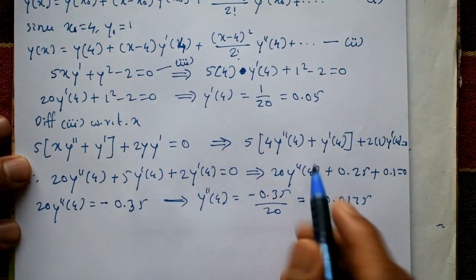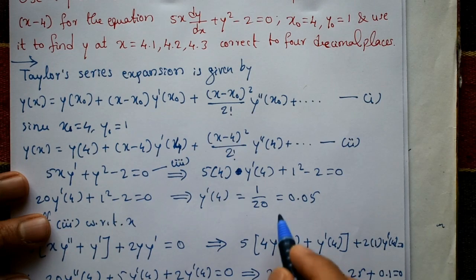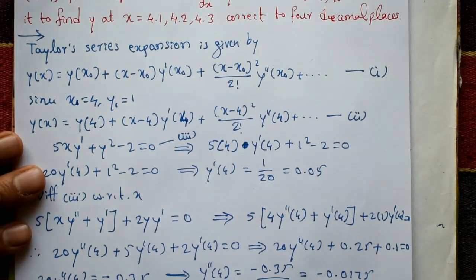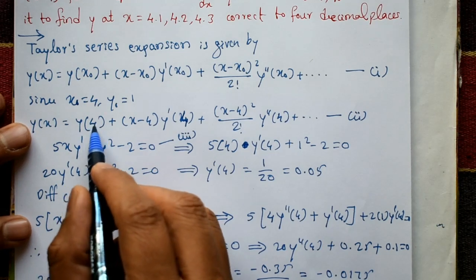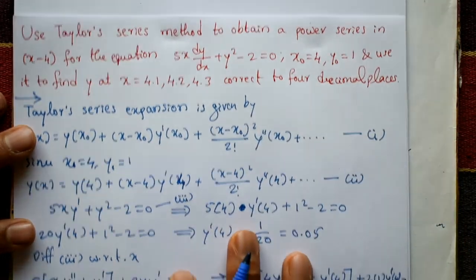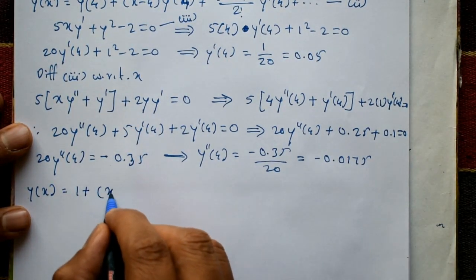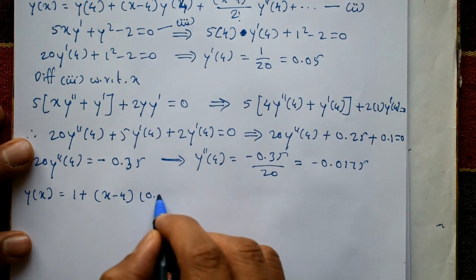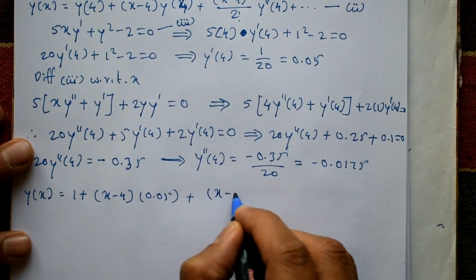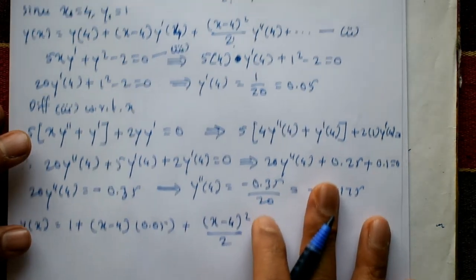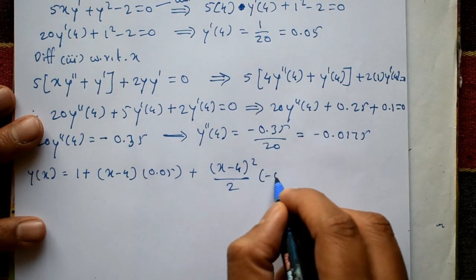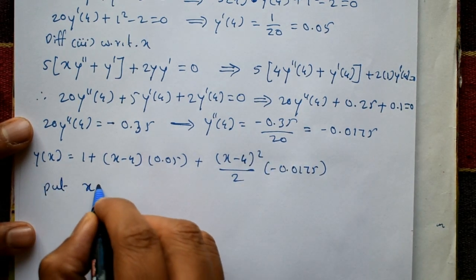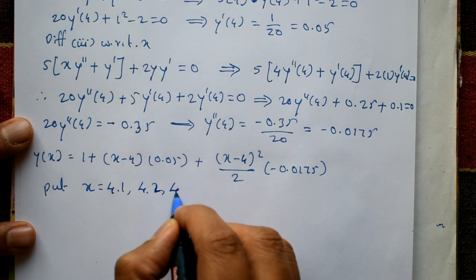Substituting y(4) = 1, y'(4) = 0.05, and y''(4) = -0.0175 into equation 2: y(x) = 1 + (x - 4)(0.05) + (x - 4)²/2 · (-0.0175). Now we evaluate this for x = 4.1, 4.2, and 4.3.